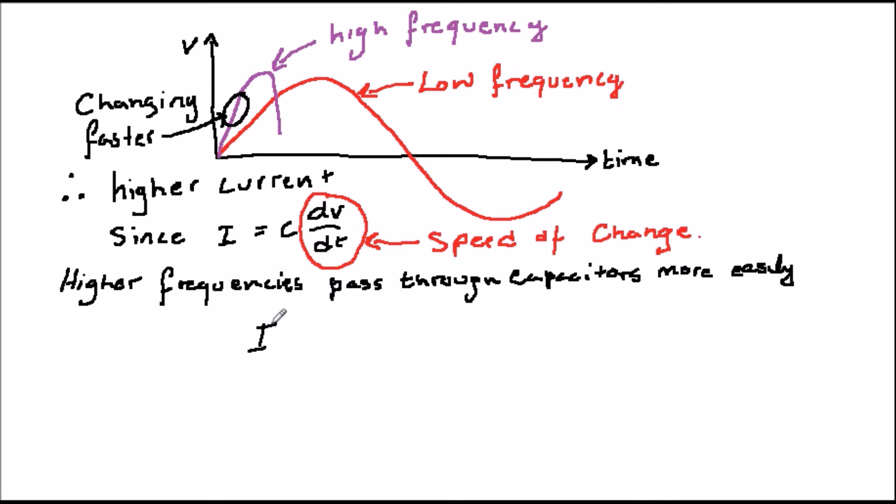We can see this trend from the equation we derived earlier, that I is equal to C omega V cos omega t. Let's say that we just want the peak values of I and V, so we'll remove the varying part, the cos omega t.